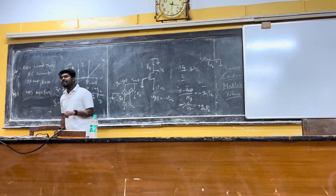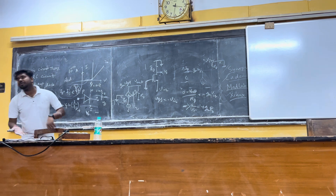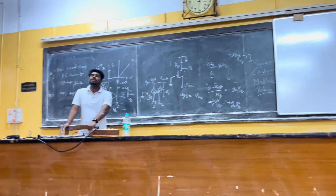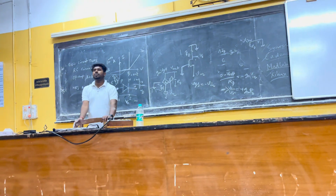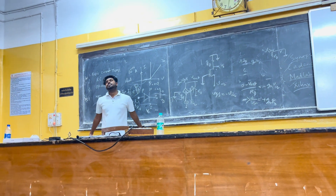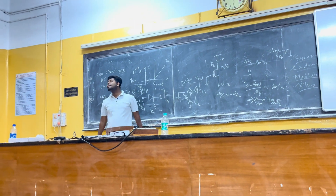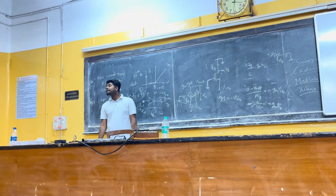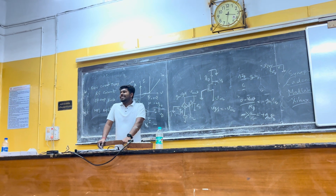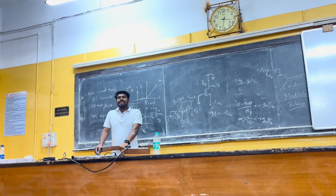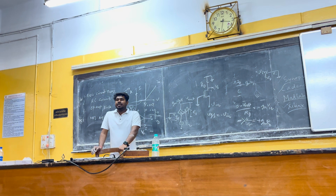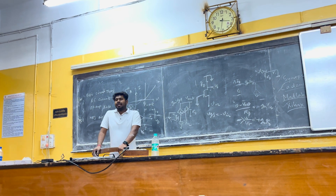Previously we were getting minus gm into RD, now we are getting plus gm into RD. Who is going to put in the voltage? What is it going to be? Not plus — minus. Why? This is our solution.